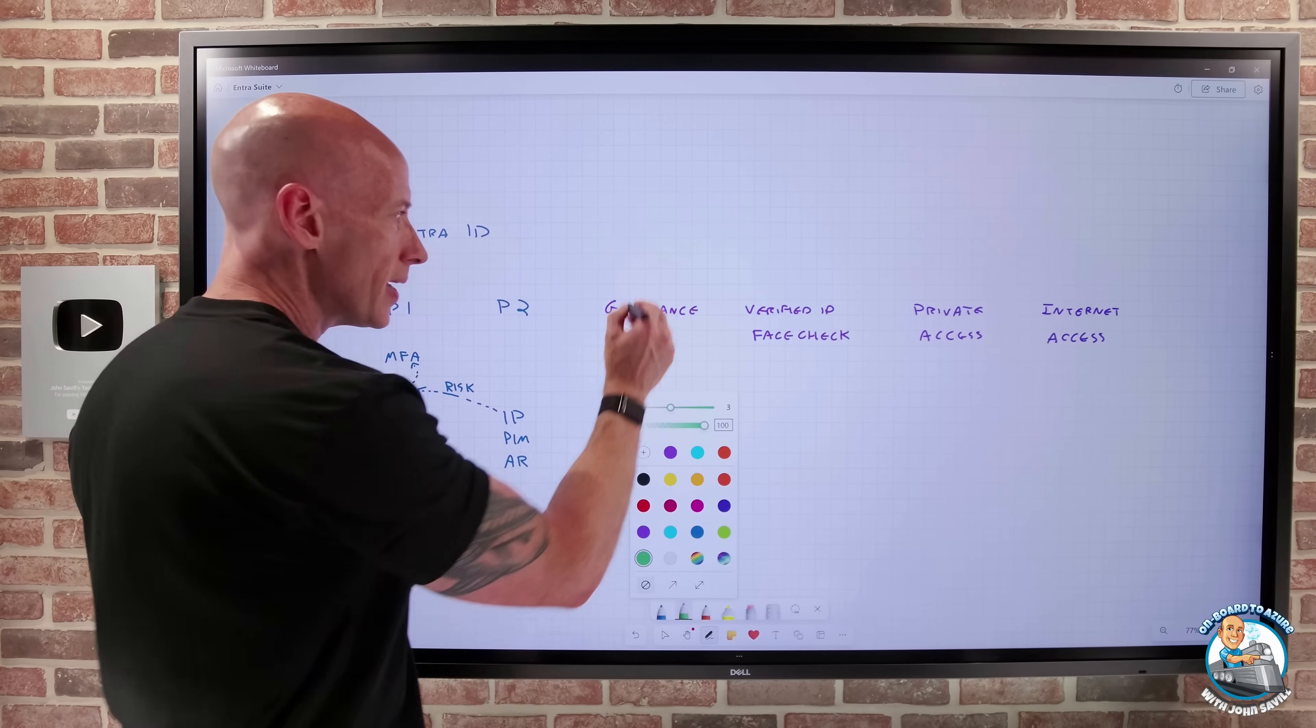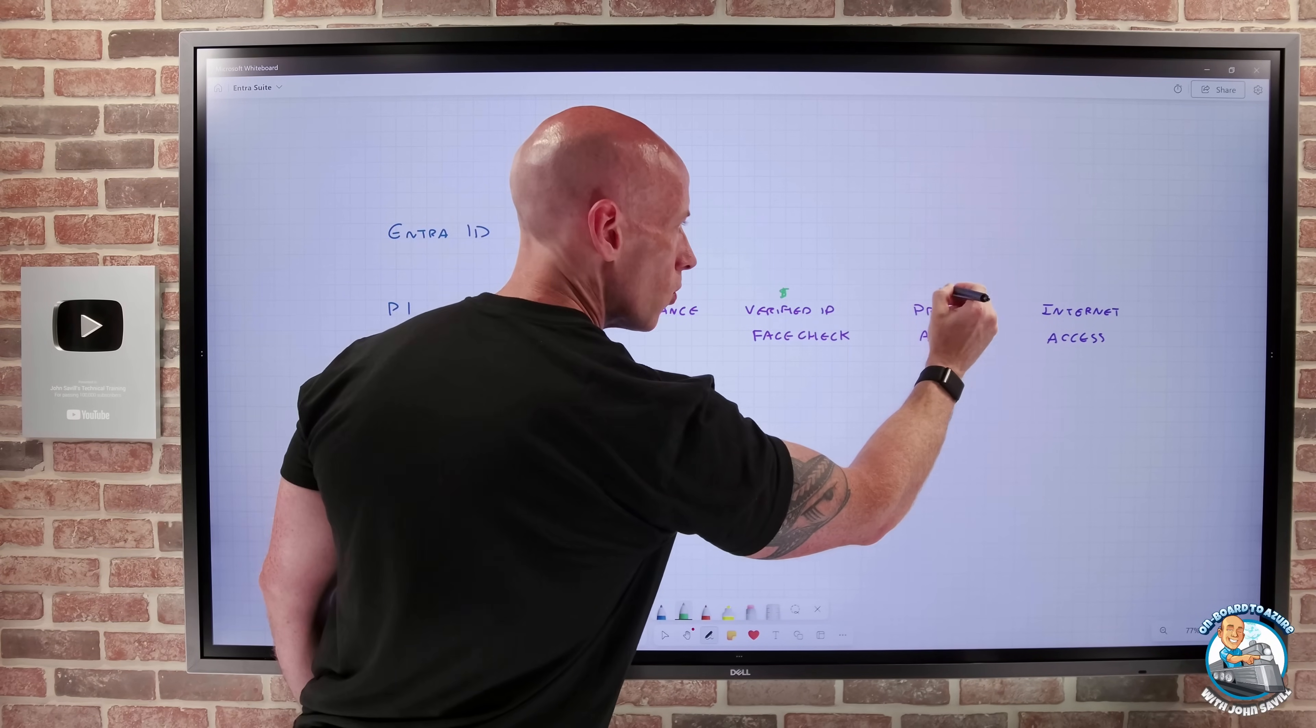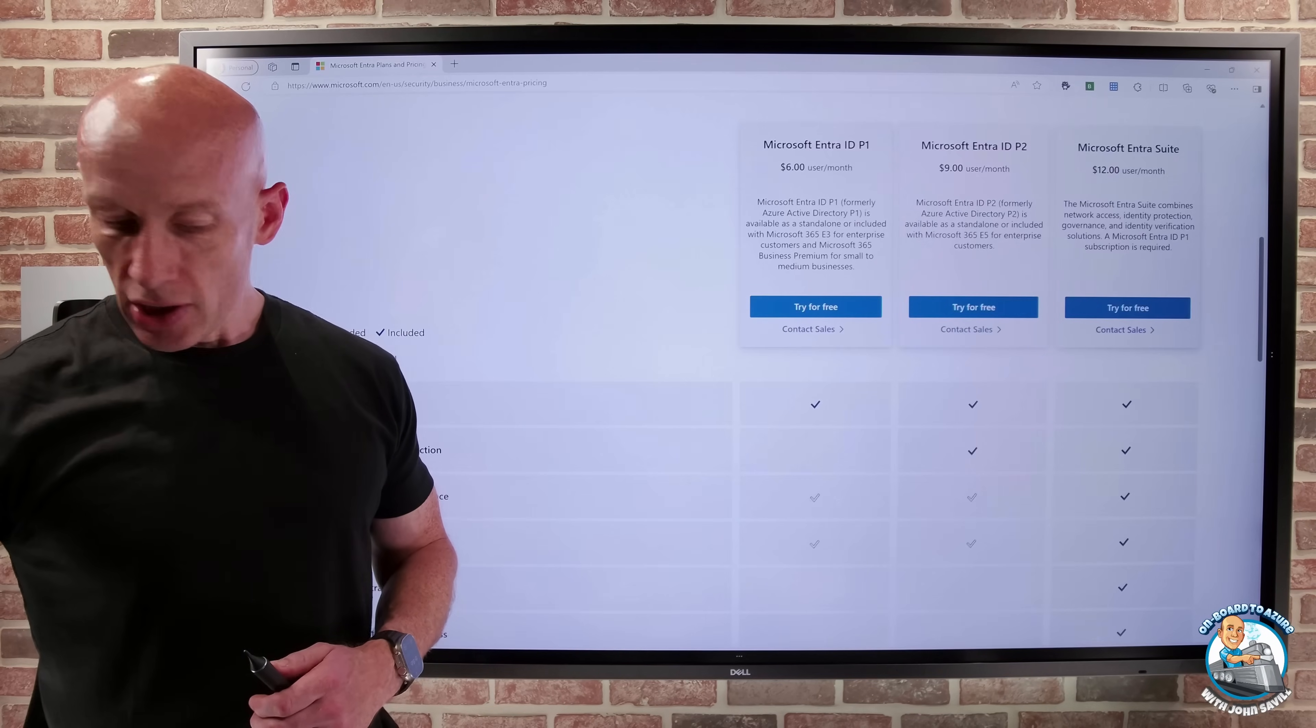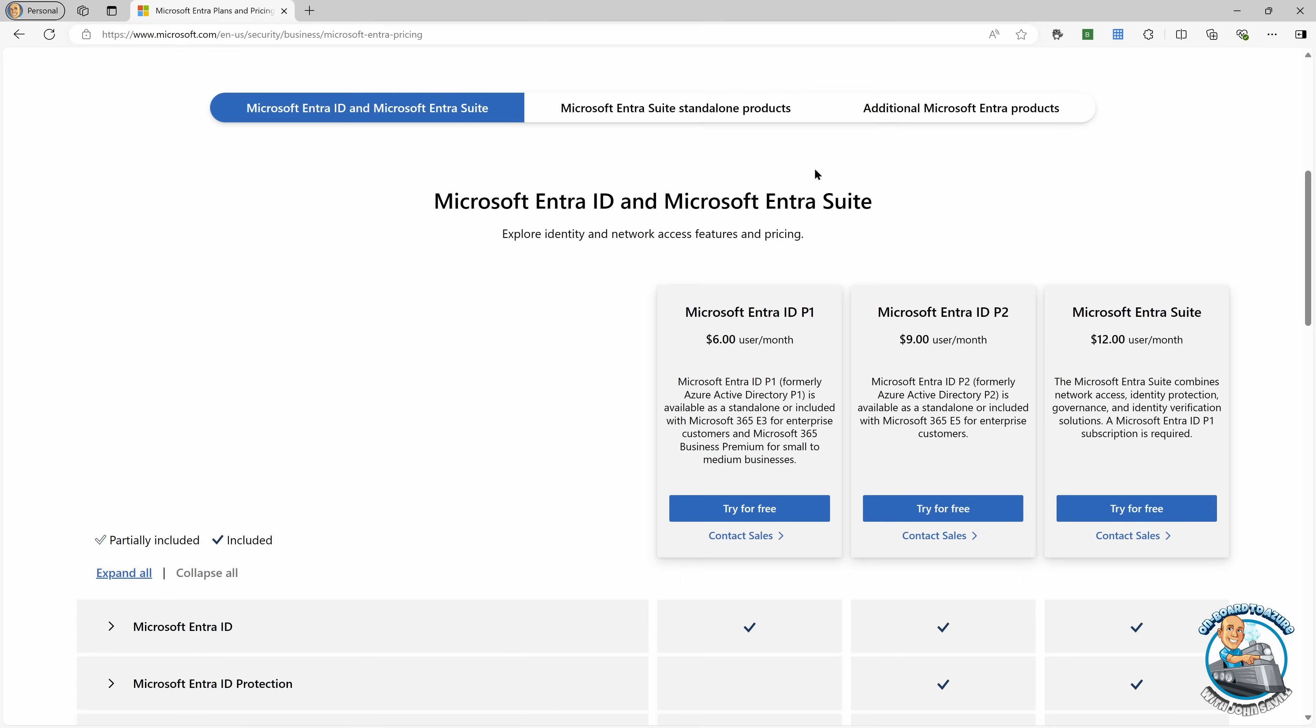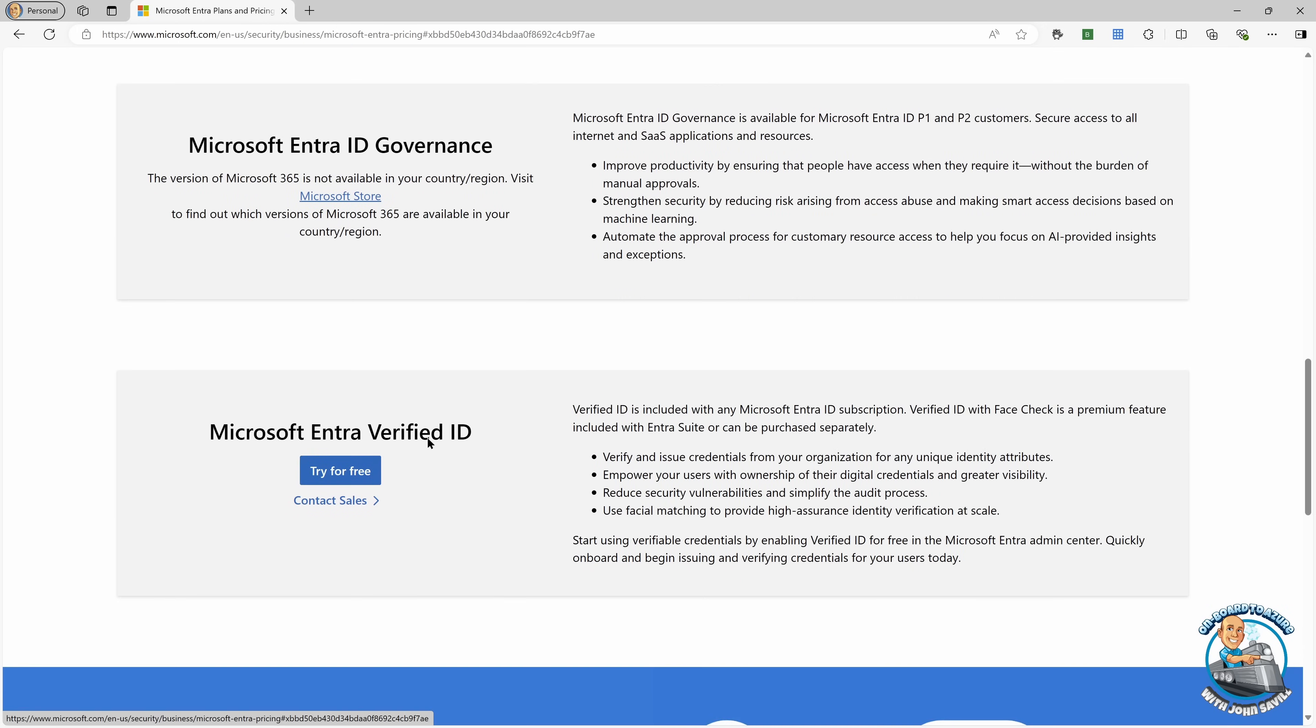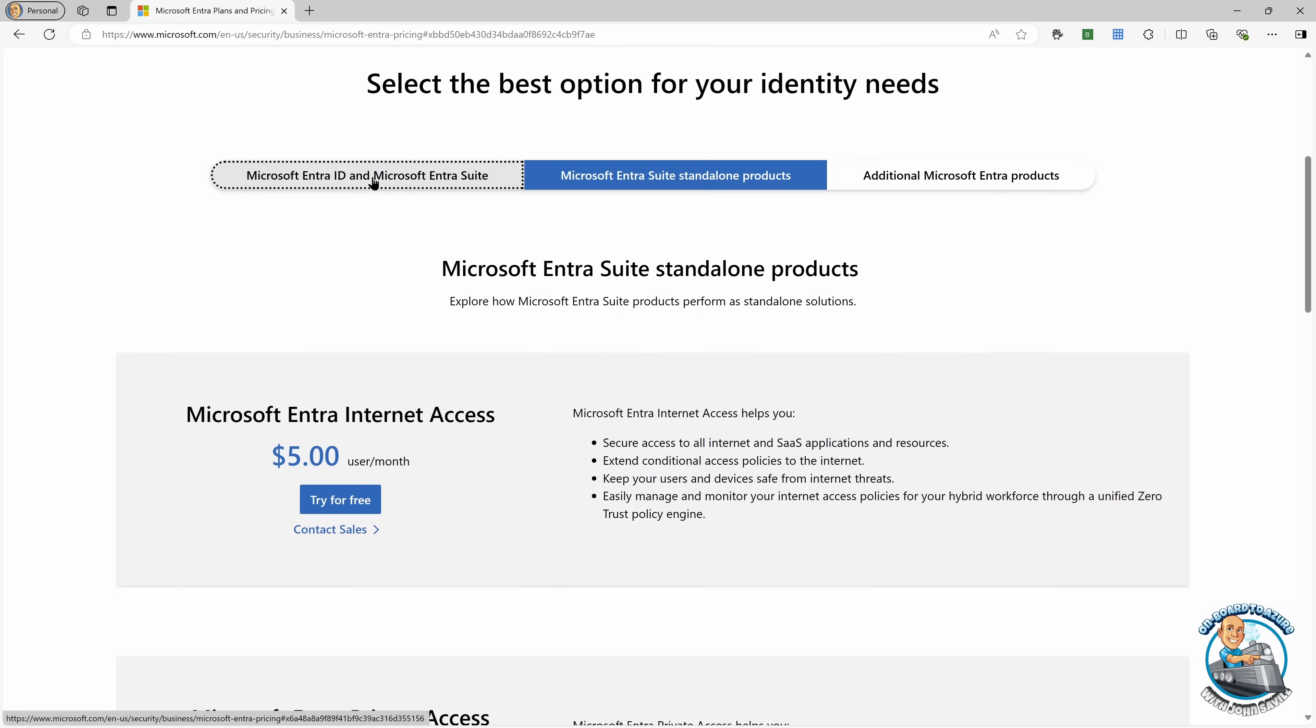So I could go and pick and say, okay, yeah, I want to do the governance or I want the face check or, hey, the private access and the internet. And we can see that if we jump over to the web. So if we actually go and look at the ENTRA page, we see the basic ENTRA P1 and the P2s, but we can also look at standalone. So we can see the internet access, the private access, the governance, and then the premium verified ID. So I could buy them all separately.